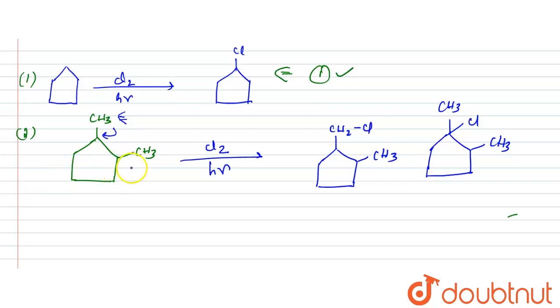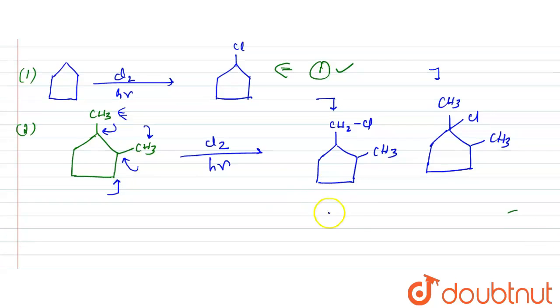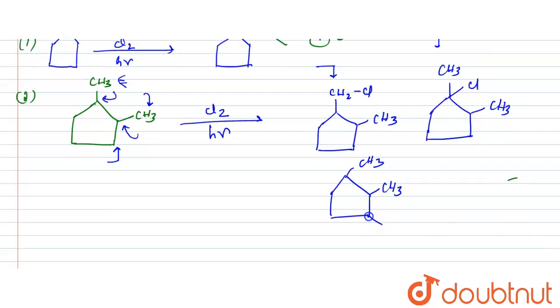Then what you can get? If you replace either this tertiary or this primary, it will be the same product. But now what you can do, you can replace this secondary hydrogen. So now what you will get, you will have CH3 at both the ends and then you will have one chlorine from this side.